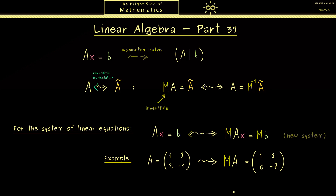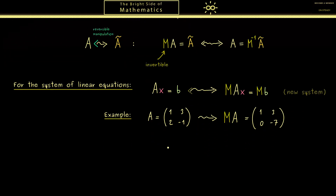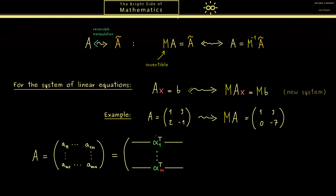We want to answer this question in a completely general context. In the example we got our result just by using row operations. Therefore, for a general matrix A we just have to look at the rows. We will consider an M times N matrix, which means we have exactly M rows. Let's give the rows a special name: alpha 1 transpose, alpha 2 transpose, until we reach alpha m transpose.